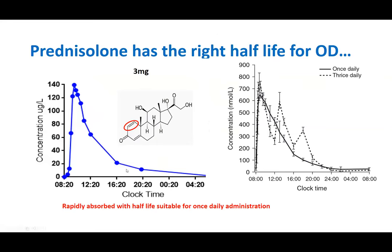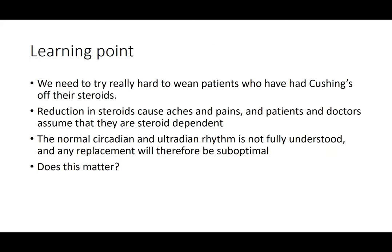Prednisolone is pretty good but not as good as your own axis. My key learning point: we should really work hard to wean patients with Cushing's off their steroids. Reducing steroids causes aches and pains, and patients and doctors assume they are dependent. But because I knew this patient had another adrenal, I was really going to go for it. We don't understand normal circadian rhythm fully, but any replacement is not as good as your own axis. She's only 28 now.